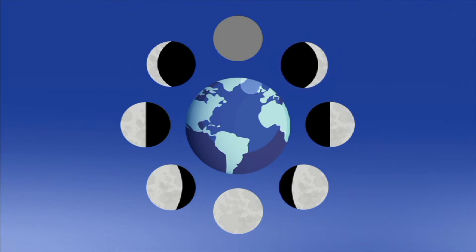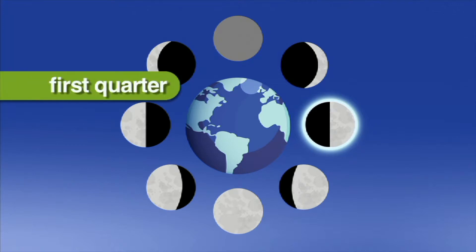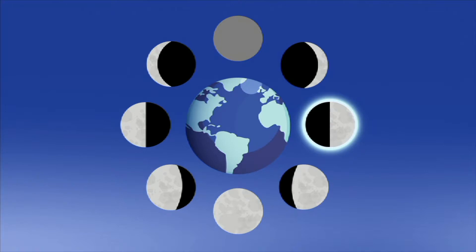The next phase is called the first quarter. The first quarter moon happens when the moon has completed one quarter of its orbit around the Earth and appears to us to be half full.